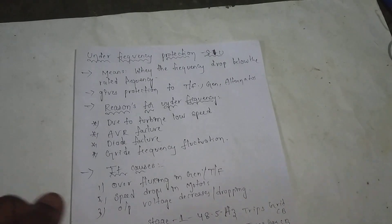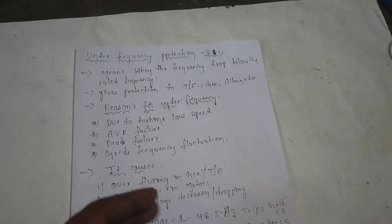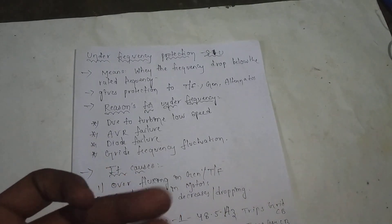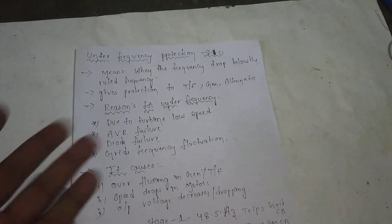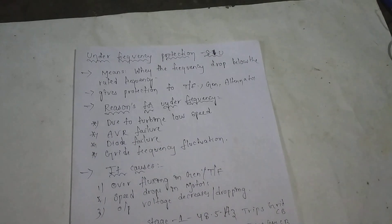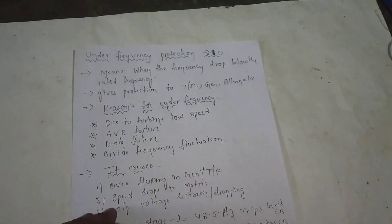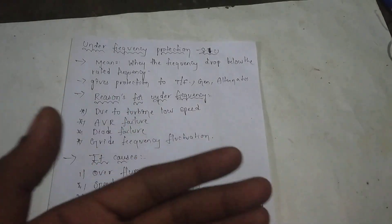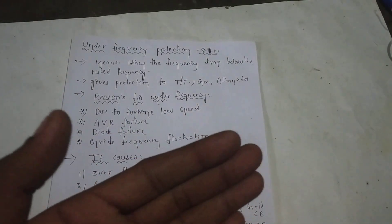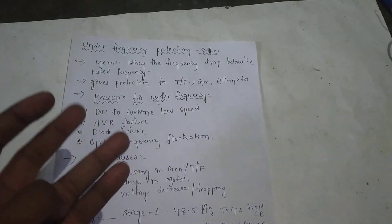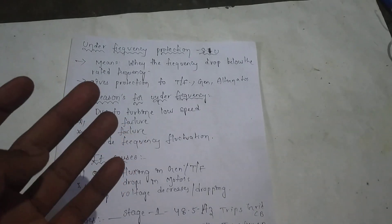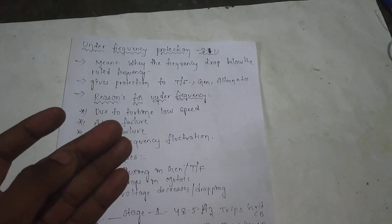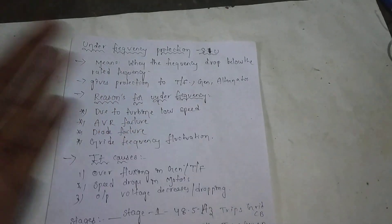If the speed and motor speed drop and you want to load a generator at a particular load, you can see the output voltage drop. For the Generator, Alternator, and Transformer, the output voltage drops under under-frequency conditions.